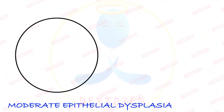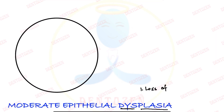Coming to the histopathology of epithelial dysplasia — dysplastic means disordered epithelium. Let's quickly recall all the features of dysplastic epithelium starting from the basal cell layer. The first feature is loss of polarity of the basal cells, that is, the basal cells have lost their orientation.